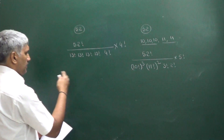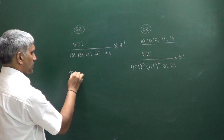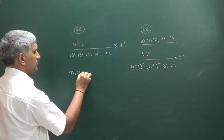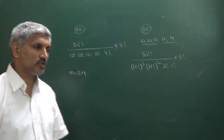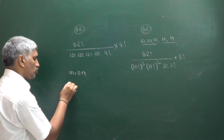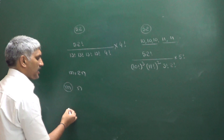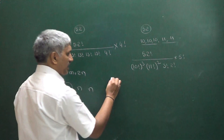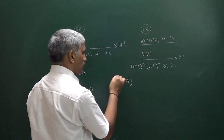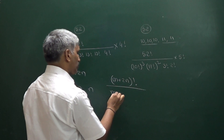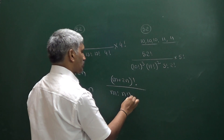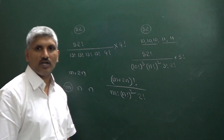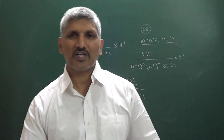Another question: total M plus 2N items. We have to divide into 3 groups — one group containing M items, another group containing N items, and another group containing N items. They can be divided in M plus 2N factorial divided by M factorial into N factorial squared, and because there are 2 identical groups, we divide by 2 factorial.